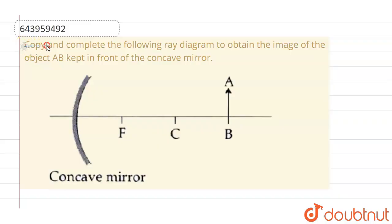the given question is: copy and complete the following ray diagram to obtain the image of the object AB, which is kept in front of a concave mirror. This is the concave mirror, this is the object AB. So what I'm doing is